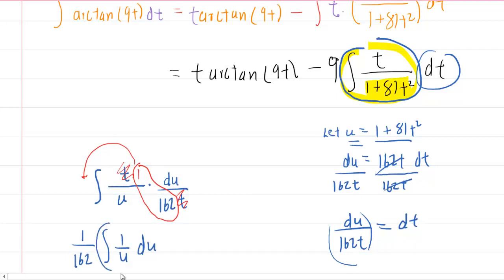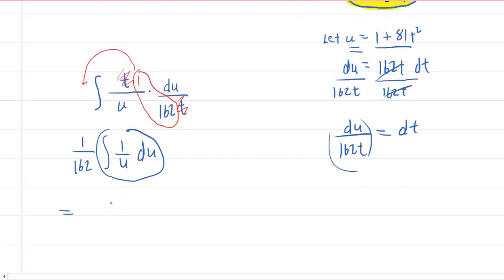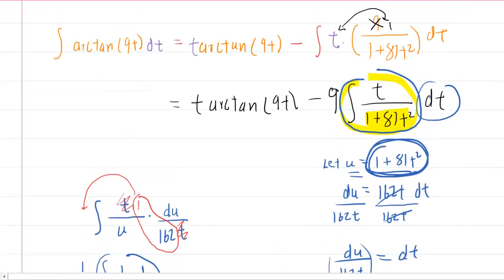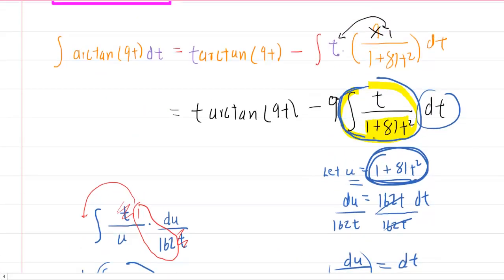We recall that the integral of 1 over u du is just the natural log of the absolute value of u. So, we'll have 1 over 162 ln absolute value of u. And then finally, we remember the u in terms of t was 1 plus 81t squared. So, that becomes the integral that we highlighted in yellow.